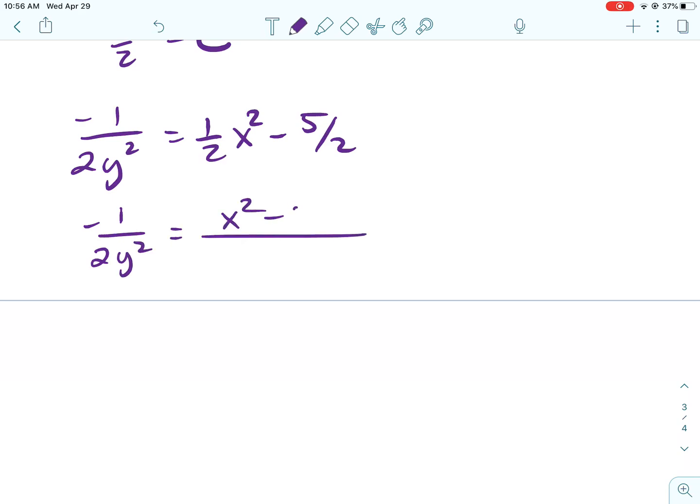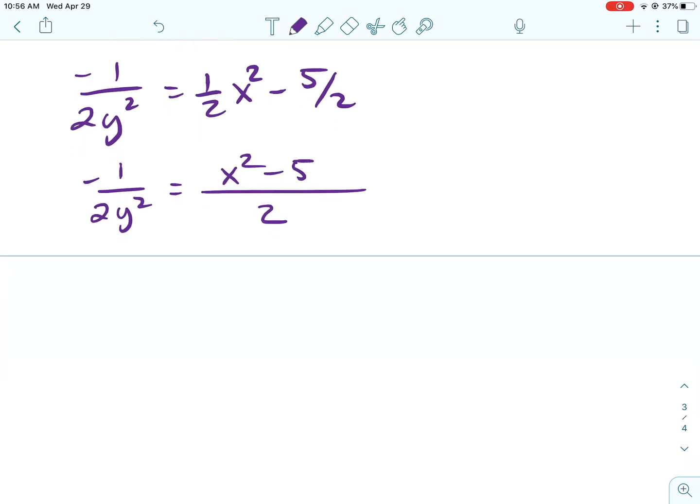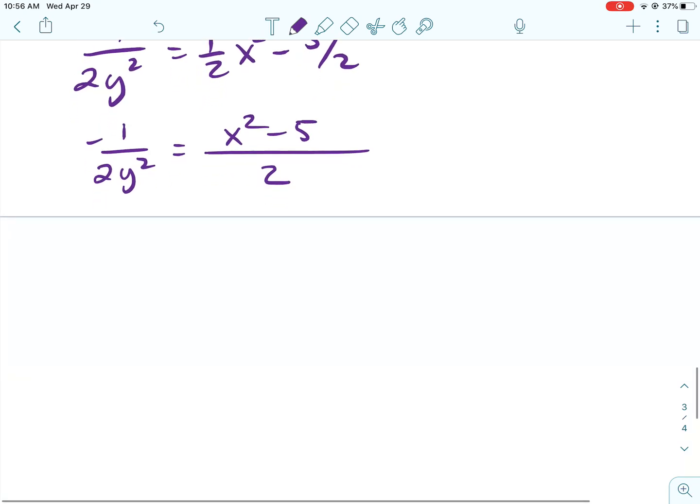I'm going to do this a little different than I did before. I'm just going to go ahead and... Well, no, let's just leave it like this. Okay, so this is going to be negative 1 over 2y squared. That's going to be x squared minus 5 over 2. So, what I can do is just flip it.